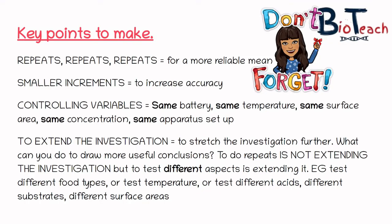As a summary, it's really important to know which key points to make. Always mention repeats — when we carry out repeats in scientific experiments it's to obtain a more reliable mean and to check the reliability of the experiment, which can also lead to validity. You could also test smaller increments: for example, if you tested temperatures at 0, 20, 40, 60, and 80, you could test every 10 degrees instead to increase accuracy. When controlling variables, always remember to use the word 'same' — same battery, same temperature, same surface area, same concentration, same apparatus setup.